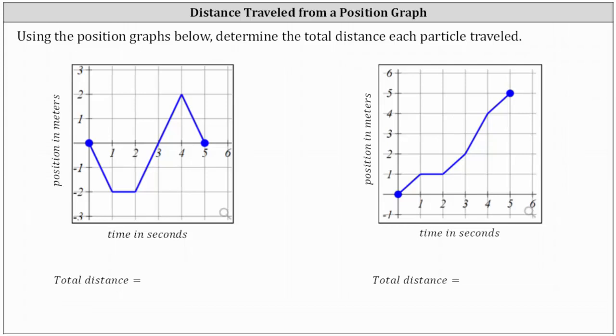Using the position graphs below, determine the total distance each particle traveled. When determining the total distance, we don't care whether the distance is in the positive or negative direction — we only care about the total distance traveled.